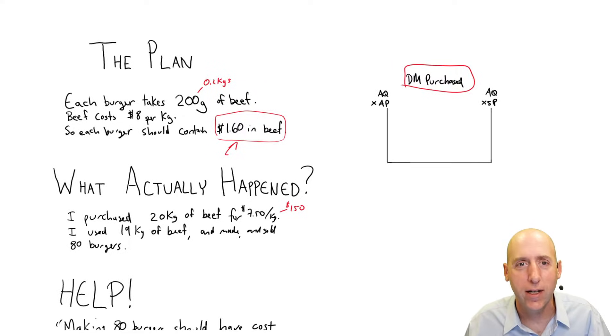AQ stands for actual quantity. That's when we're talking about materials, we're talking about grams, kilograms, pounds, liters, ounces, these types of units of measure is what's going in here, the actual quantity of beef purchased. Okay, what was the actual quantity of beef purchased? Well, we're worried about what actually happened.